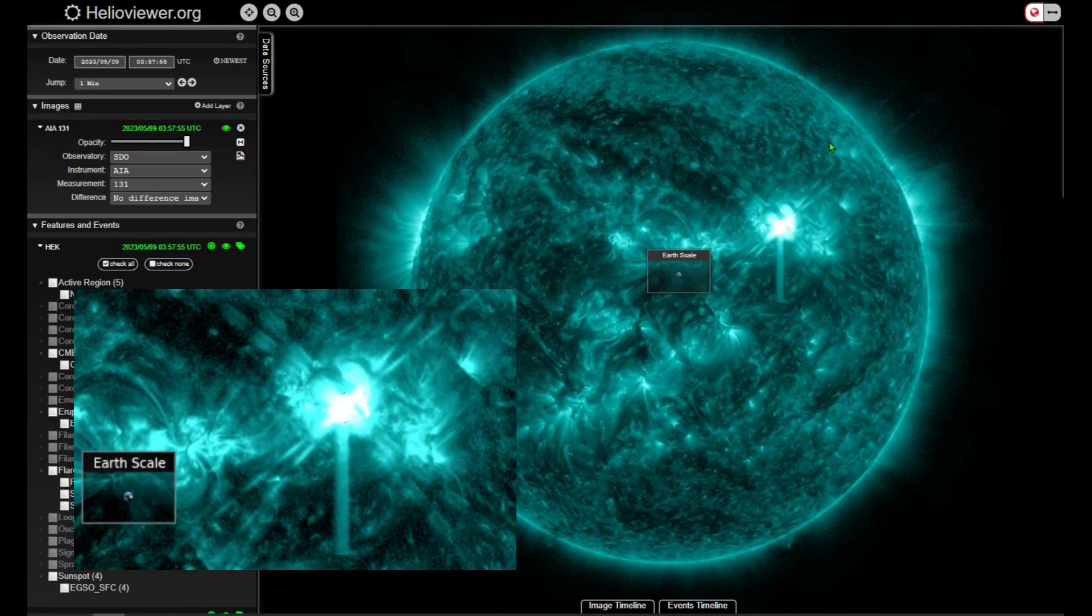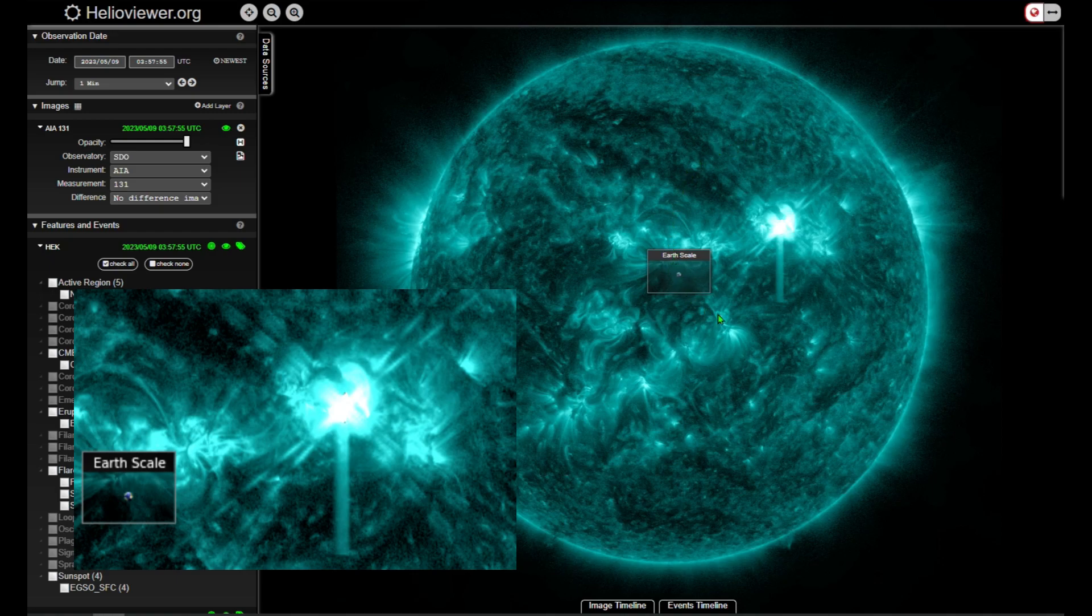Just to show you how serious this was, take a look at this screenshot on helioviewer.org. You could see that X formation. It wasn't quite an X-class flare, but we were very, very close, and I'm going to show you the charts in just a moment.